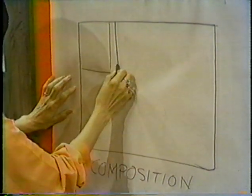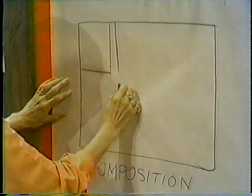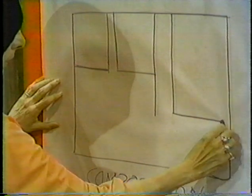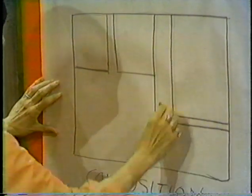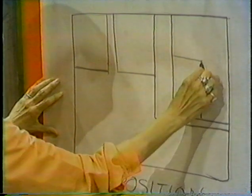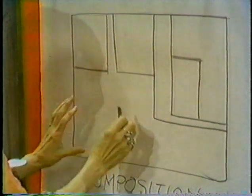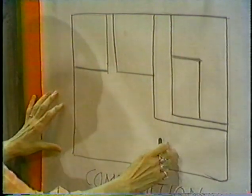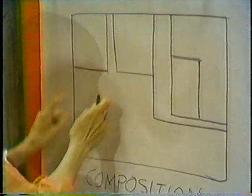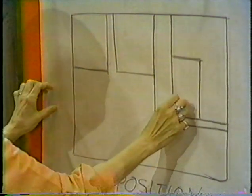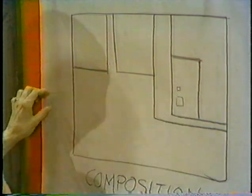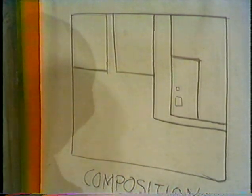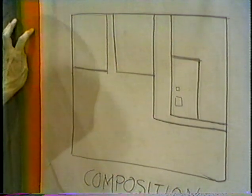Suppose you start dividing your space now — you're going to take a line like this and maybe a line across here. Notice when you are working with just vertical and horizontal lines, what a feeling there is of strength and stability. There isn't any movement — everything is quiet and orderly. You have large, medium, and small areas to work with. You have just a composition, a design from which you can build almost any number of pictures.